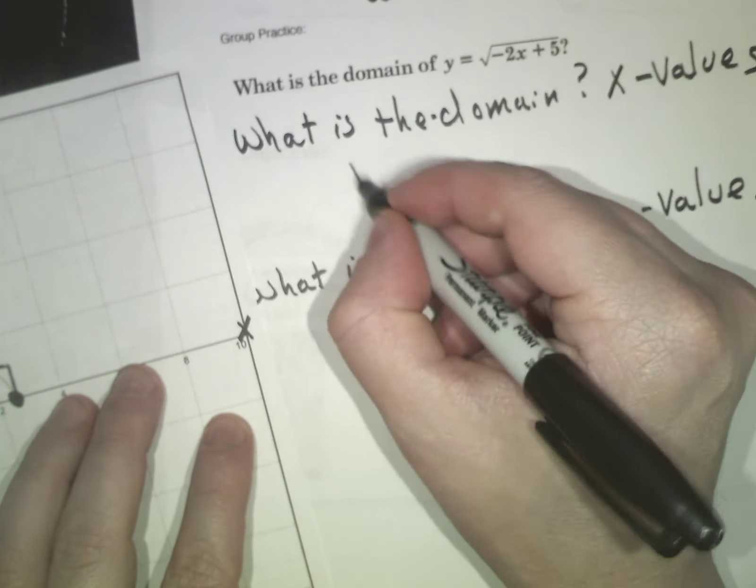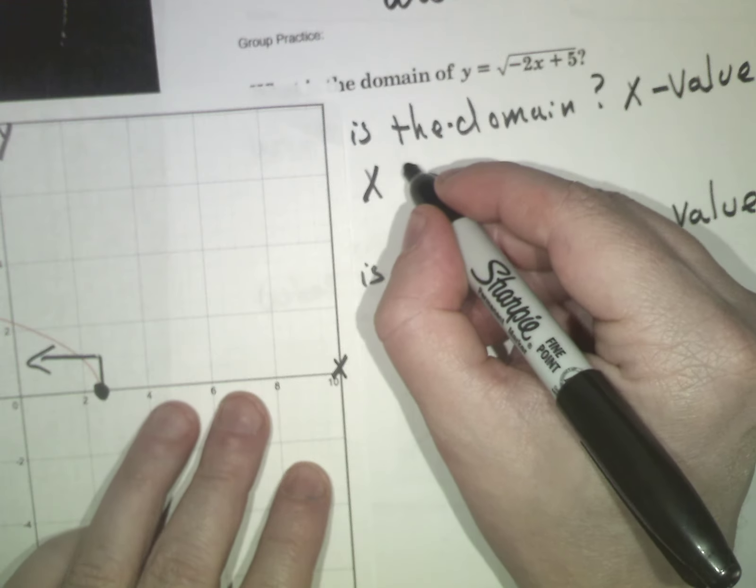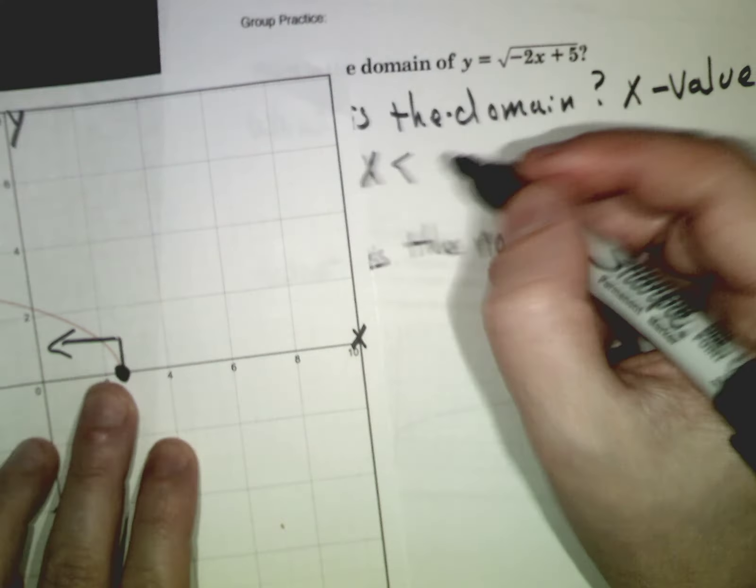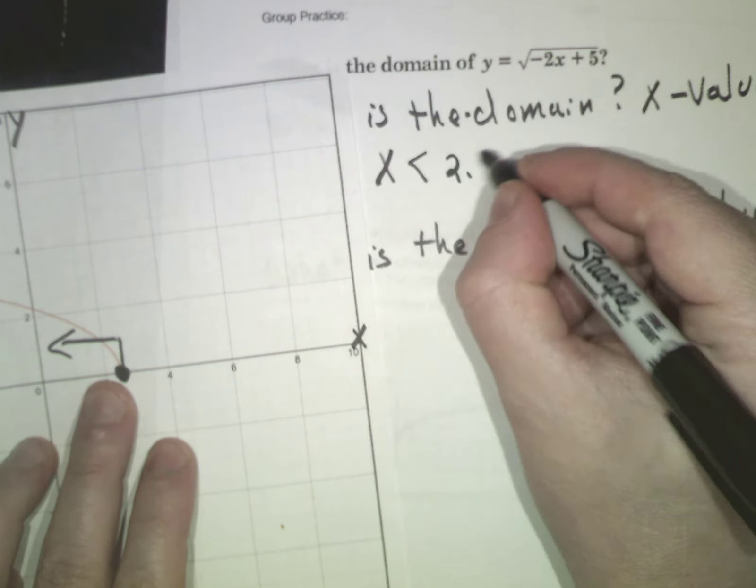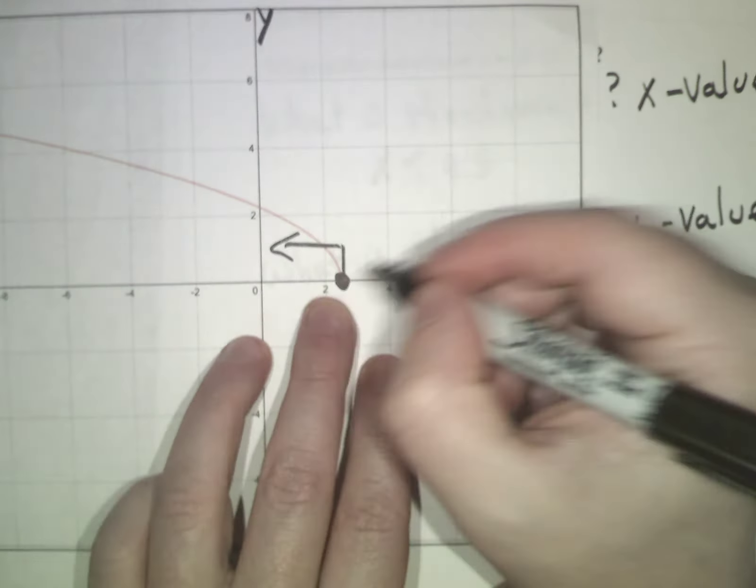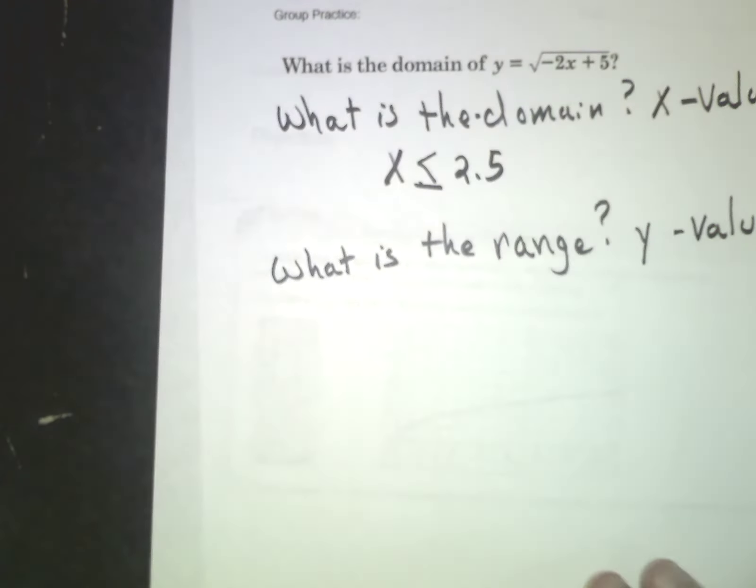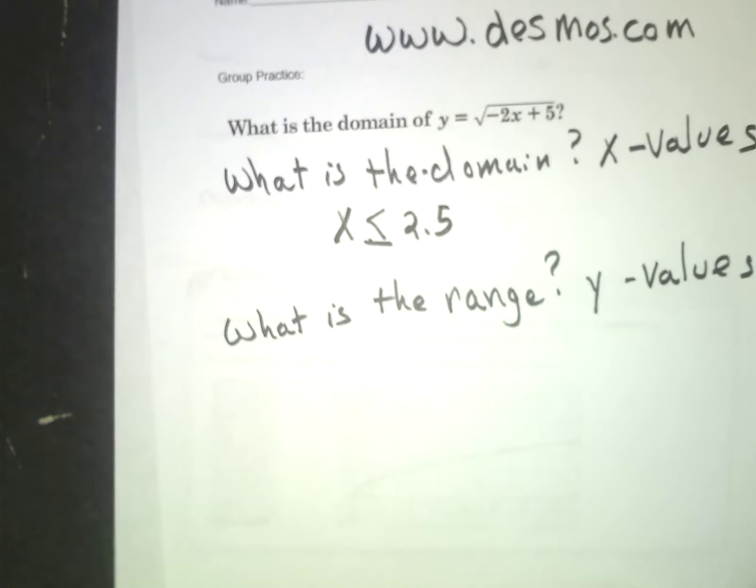If you remember when we used to graph inequalities, this graph only goes in that direction. That means specifically that x is less than or equal to - if you went on the calculator you could see this was 2.5. So x is less than or equal to 2.5.